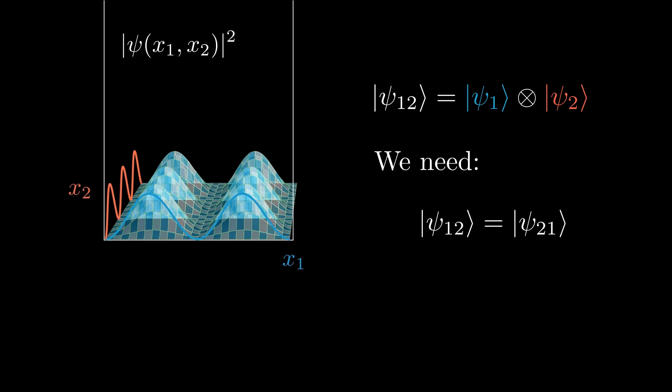To obtain this symmetry, we can go through the process of symmetrizing our new two-particle wave function. Mathematically, this is very easily done. Writing our two-particle wave function as the combination of both one-particle wave functions, to obtain a symmetry between the two particles, we simply add the two wave functions again, but now with the two particles interchanged.